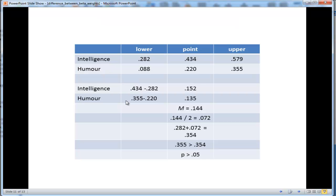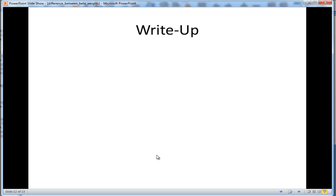Therefore, we've got to conclude that because 0.355, which is the upper bound point estimate for humor, is greater than 0.354, and it's just barely greater but it's greater, we have to say that P greater than 0.05 based on the 50% overlap rule.